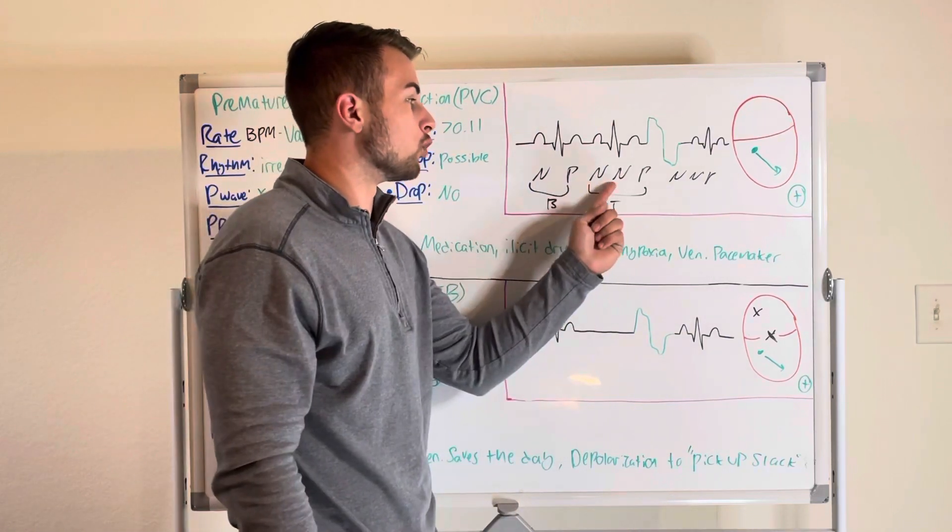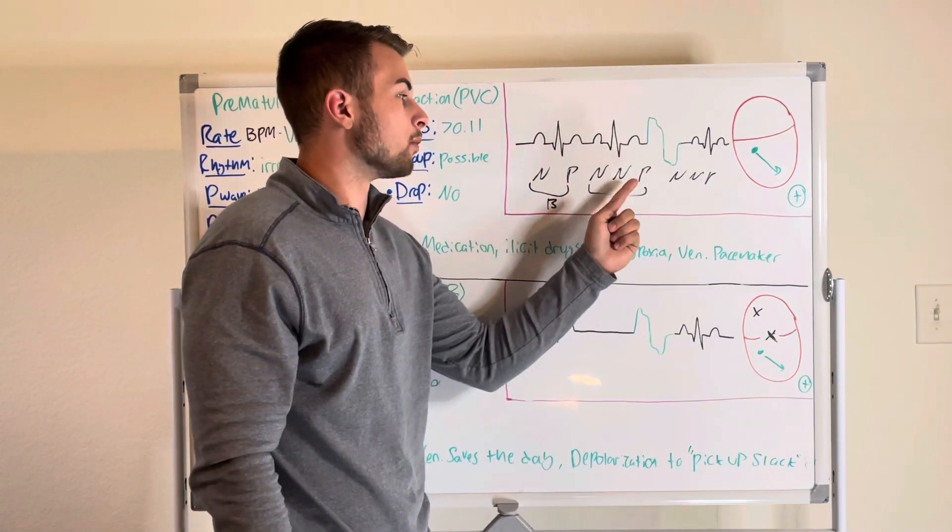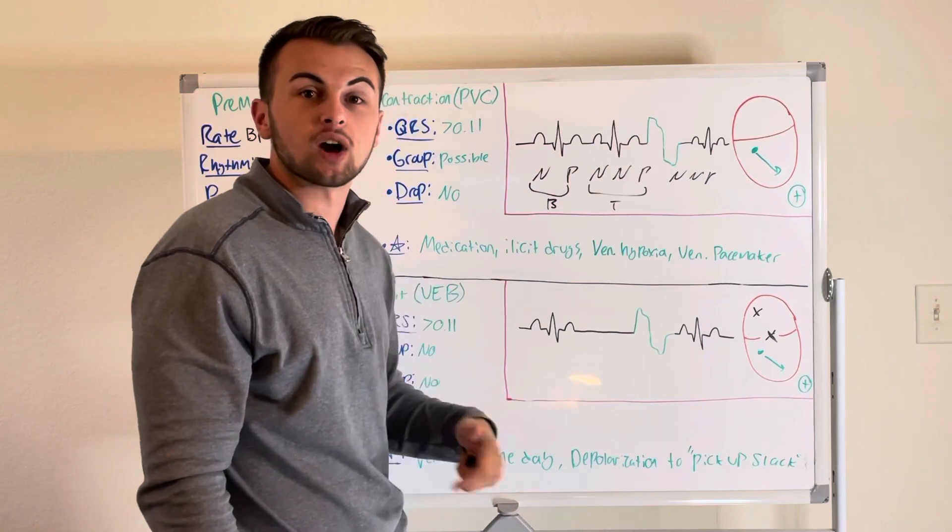Now if it is normal, normal PVC, normal, normal PVC, we say that it is trigeminy.